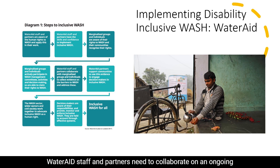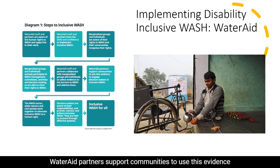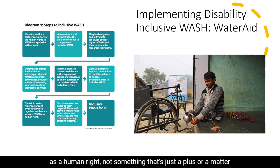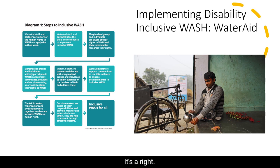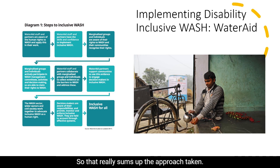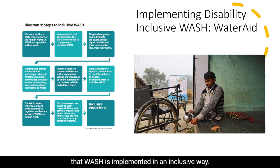WaterAid staff and partners need to collaborate on an ongoing basis to collect evidence on the barriers to WASH and actually address them. WaterAid partners support communities to use this evidence in engaging decision makers in designing an inclusive WASH program. The wider WASH sector, other sectors, and civil society must work together to advocate for an inclusive WASH approach as a human right — not something that's just a plus or a matter of charity. Decision makers need to be aware of their responsibilities and provide, monitor, and enforce inclusive WASH, held to account through effective systems of monitoring and evaluation.